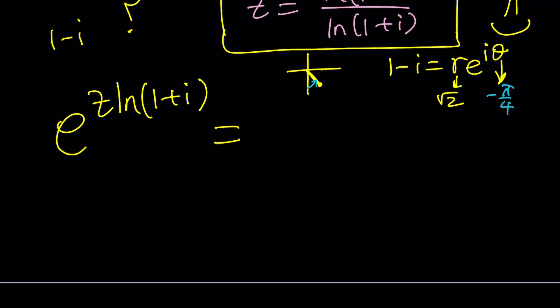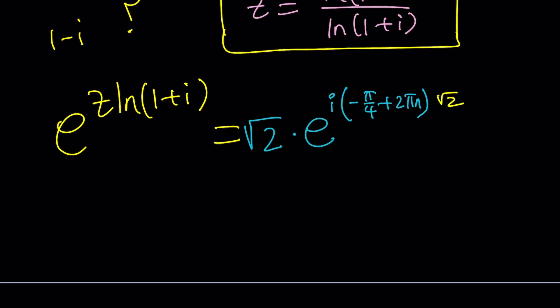So let's write it in a more general form, which is square root of 2 times E to the power I. And now I'm going to write my argument as negative pi over 4 plus 2 pi N. So far so good. Yay. Let's clean up this area a little bit because it's too messy. And then we're going to go ahead and simplify this. Okay. Here we go.